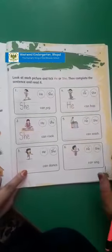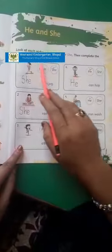I hope you will complete five and six on your own. Do the page. Now what is there in the last part of the question? Read it. She can jog. She can cook. She can dance. He can hop. He can wash. He can sing. Like this, you will complete the page. Page number 89 of your Oxford Ink book. And do the reading part nicely.